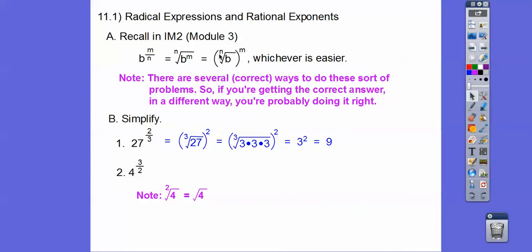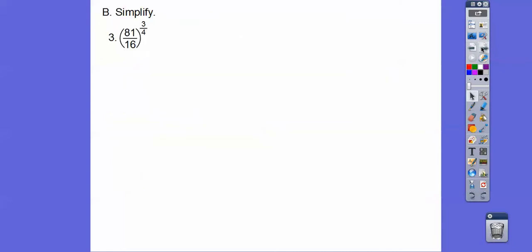The index number is the denominator and then that numerator is the outside piece right there. So this is going to be the square root of 4 cubed. Square root of 4 is 2, 2 cubed, 8. Let's keep going.